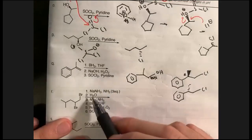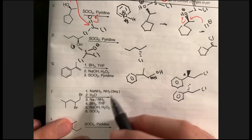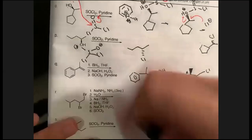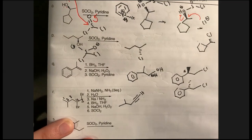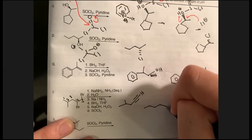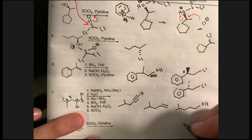Steps one and two: alkyne preparation — forming the acetylide anion and reprotonating to get a 5-carbon chain. Step three: sodium metal and ammonia gives the reductive E-alkene. Steps four and five: hydroboration to form the anti-Markovnikov alcohol. Step six: thionyl chloride SN2 pathway. We get the expected chloroalkane product — it's like a mini-synthesis where everything is shown step by step.